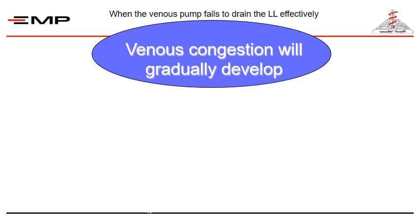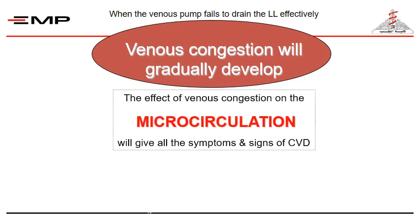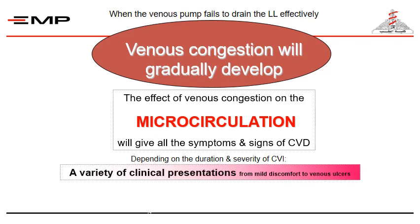What is the sequelae of venous pump failure? When the venous pump fails to drain the lower limb effectively, venous congestion will gradually develop. The effect of venous congestion on the microcirculation will give all the symptoms and signs of chronic venous disease. Depending on the duration and severity of chronic venous insufficiency, a variety of clinical presentations from mild discomfort to venous ulcers will develop. We will discuss all this in detail in the face-to-face session.